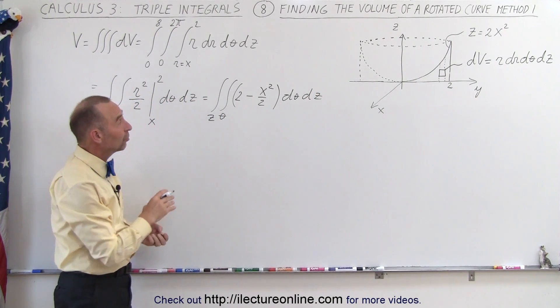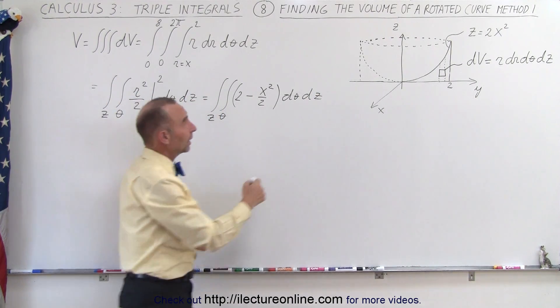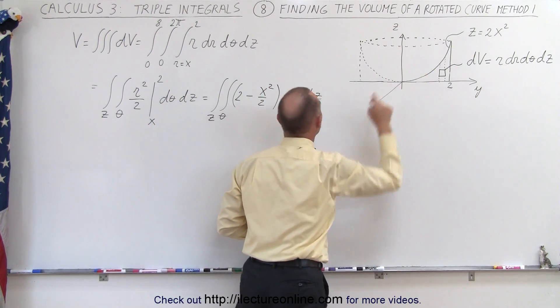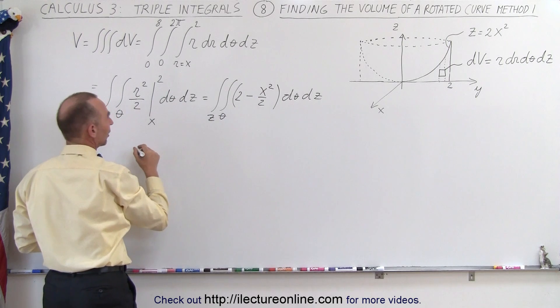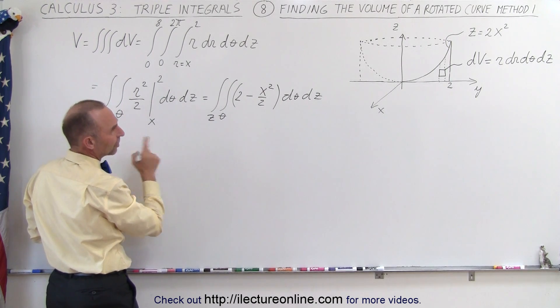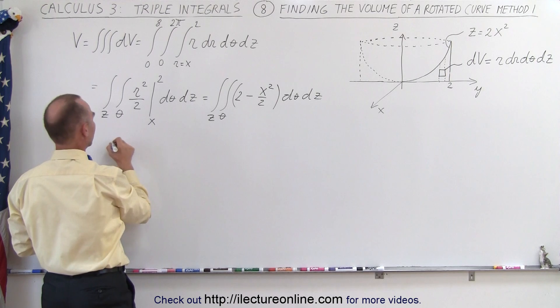Now what we should do at this point is we should replace x squared with what x squared is equal to, which is z divided by 2. So we'll go ahead and put z divided by 2 there and we'll get the following.